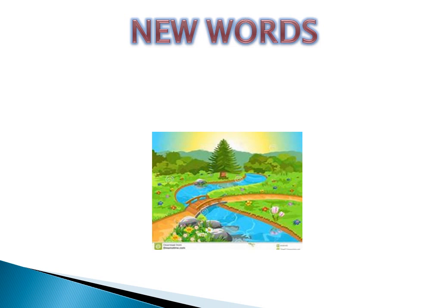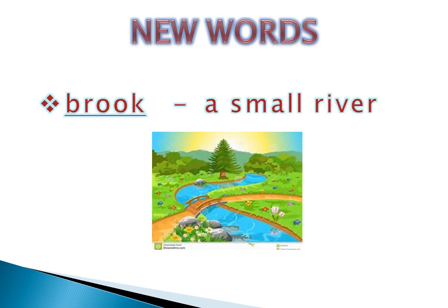Can you see the picture? What do you see in the picture? Yes, a river is flowing. The new word that I want you to learn is 'brook,' and brook means a small river. Can you see a small river in the picture? Brook means a small river. Note down these new words in your notebooks, and you have to learn the meaning of these new words.